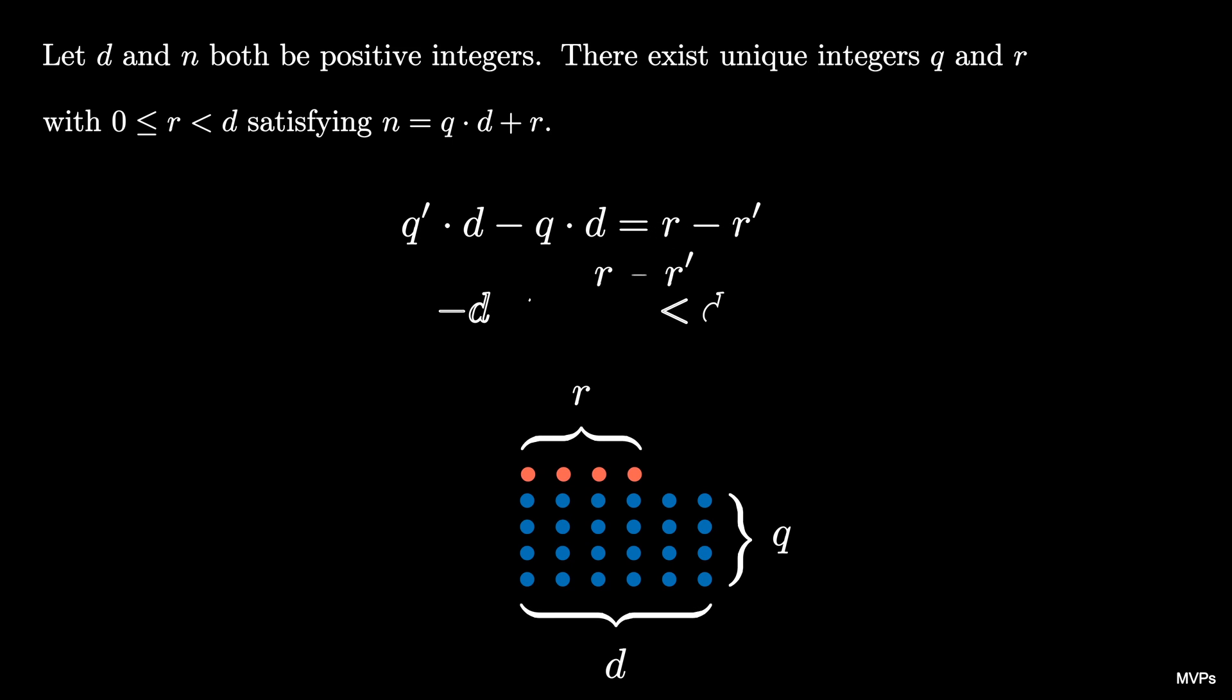But now because r and r prime are both between 0 and d their difference is between negative d and d. This means that q prime times d minus q times d is a multiple of d that lives between minus d and d.